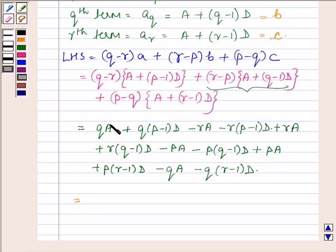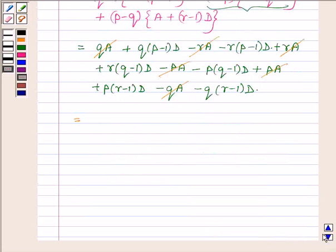So now qA cancels out with minus qA, minus rA with plus rA, minus pA with plus pA and so we further have